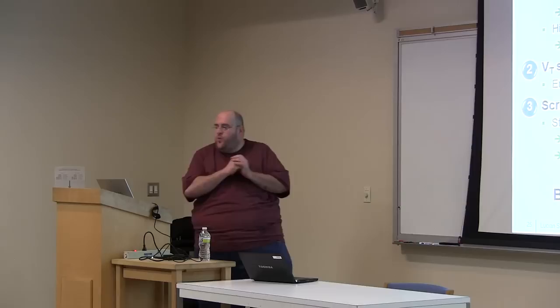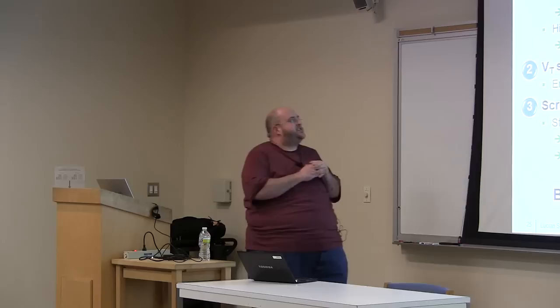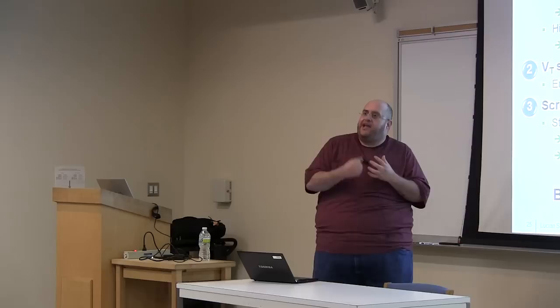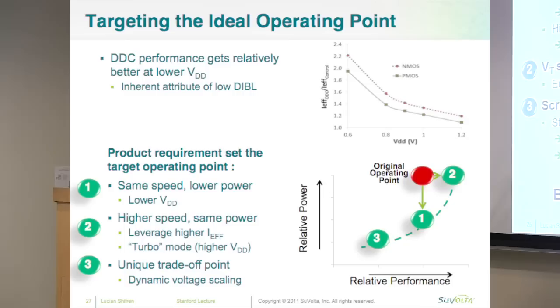Let me go over the device we're working on. We call it the deeply depleted channel, or DDC transistor. What we've essentially done is taken a standard bulk planar transistor — the thinking being, why change it if you don't have to? If you can get FinFET-like advantages from a bulk planar device, it's going to be a lot cheaper, you can lower the voltage, you can control the variation a lot better — it's going to be a better device.